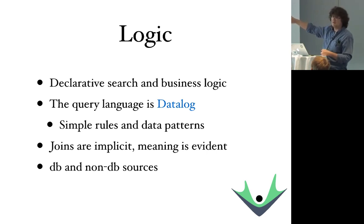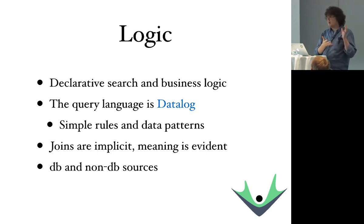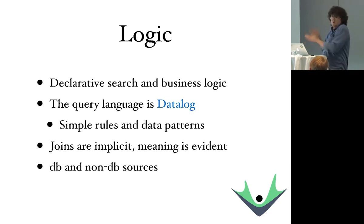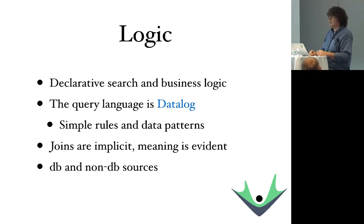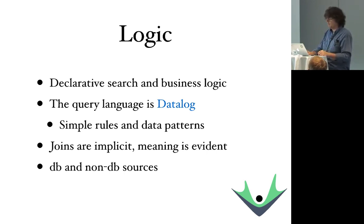In Datalog, joins are implicit. It's a very evident kind of code as you read it. In addition to accessing the database, we really want applications to be more declarative themselves. The Datalog engine can be applied to your own data in memory or data from other sources — you can combine database sources and in-memory sources and collections together in queries. You can query collections, you can query system properties. Those kinds of applications are clearer and easier to debug and make correct.